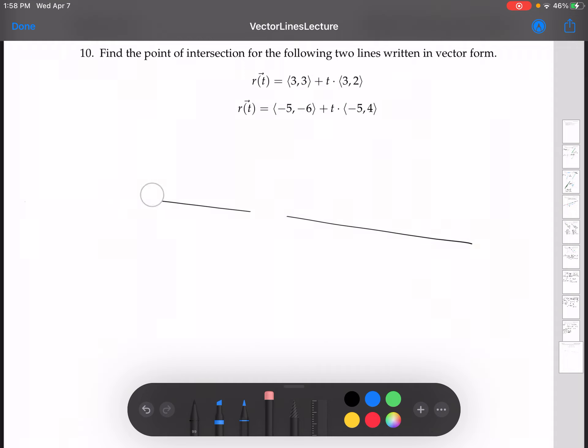Now remember from a previous video that we can't assume that the t values for the point of intersection are the same. So to keep us from making that mistake, what we want to do is to replace the t value or the t in one of these with an a, or just really with any other variable besides t. I'm going to use a. So I'm going to replace, in this one I'm going to replace the t's with the letter a.